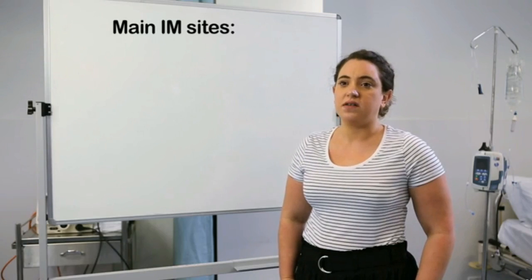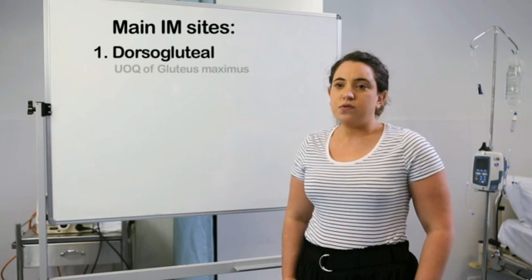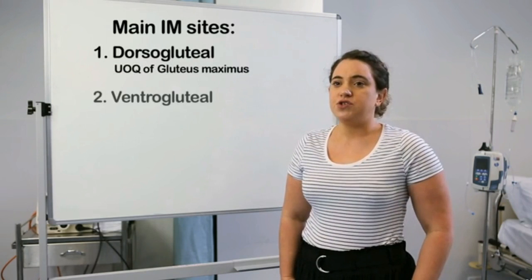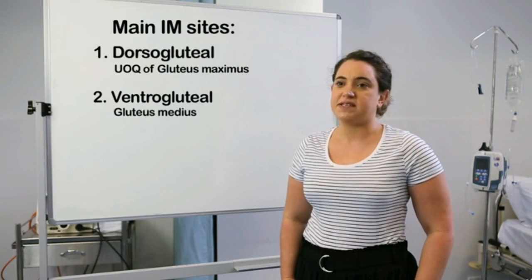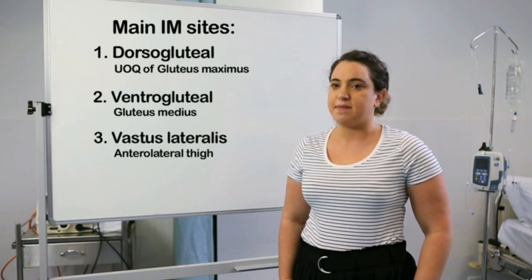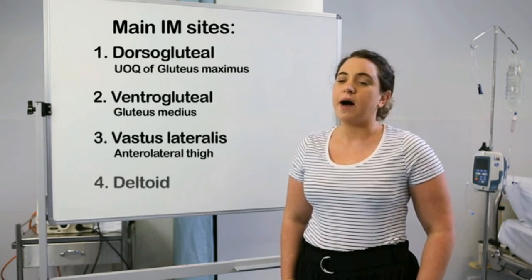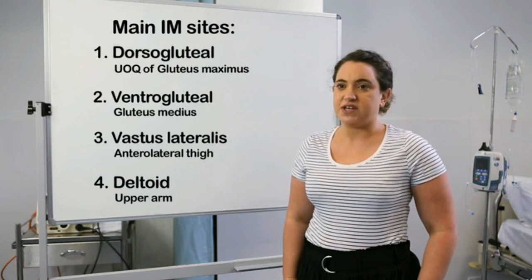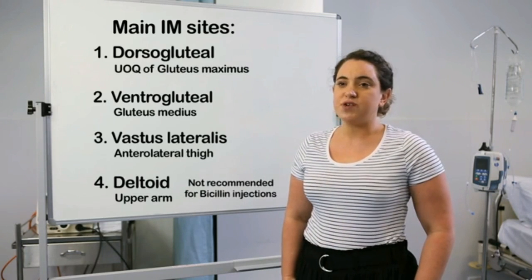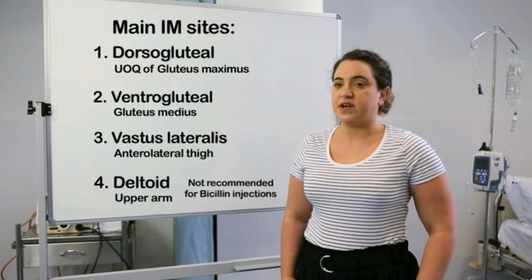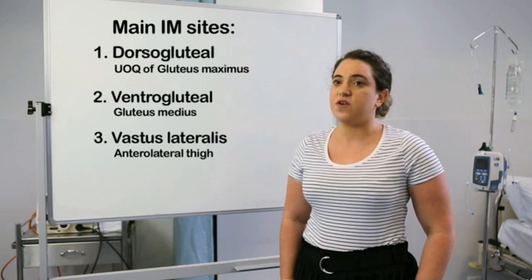There are four main intramuscular injection sites: (1) Dorsogluteal, also referred to as the upper outer quadrant of the gluteus maximus; (2) Ventrogluteal, in the gluteus medius muscle; (3) Vastus lateralis, or the upper outer thigh muscle; (4) Deltoid, or upper arm muscle. The deltoid muscle is only for small volume injections of less than 2ml, and is most commonly used for vaccinations. It is not recommended for bicillin deliveries and is not discussed any further in this video.